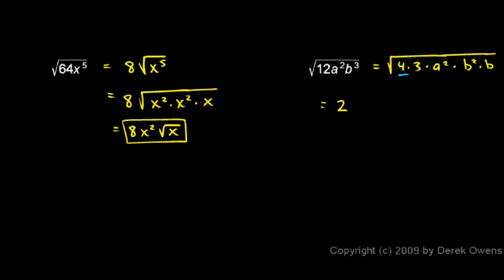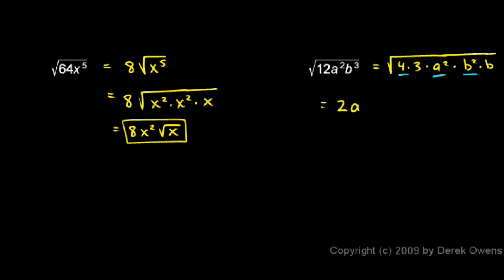The 3 I'm going to leave and come back to in a minute. This a squared under the radical — the square root of a squared is just a. Then I have b squared times b. The square root of b squared is the same as just having a b outside of the radical. And then I still have, under the radical, this 3 and this b. And that's my answer: 2ab times the square root of 3b.